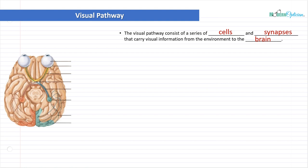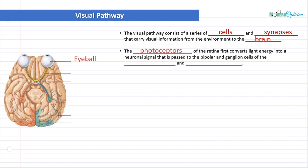So let's go over a few different things. So the visual pathway consists of a series of cells and synapses that carry visual information from the environment to the brain, because the brain is where everything happens, right? So if we think vision, we think eyes. However, we should also be thinking brain, because without the brain, the eyes have nowhere to hand it off.